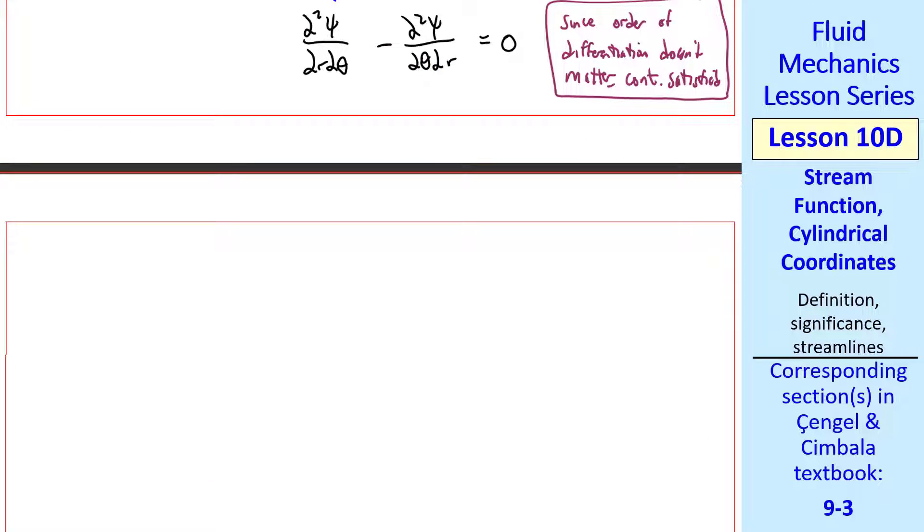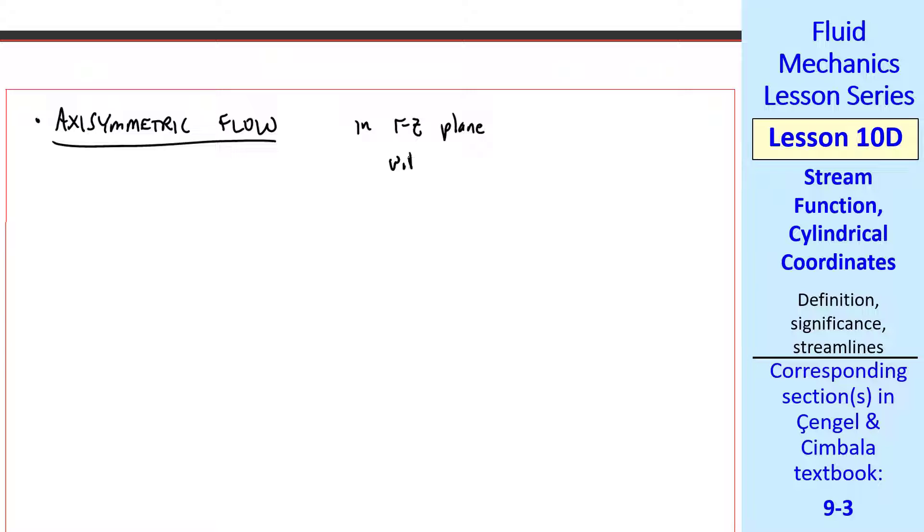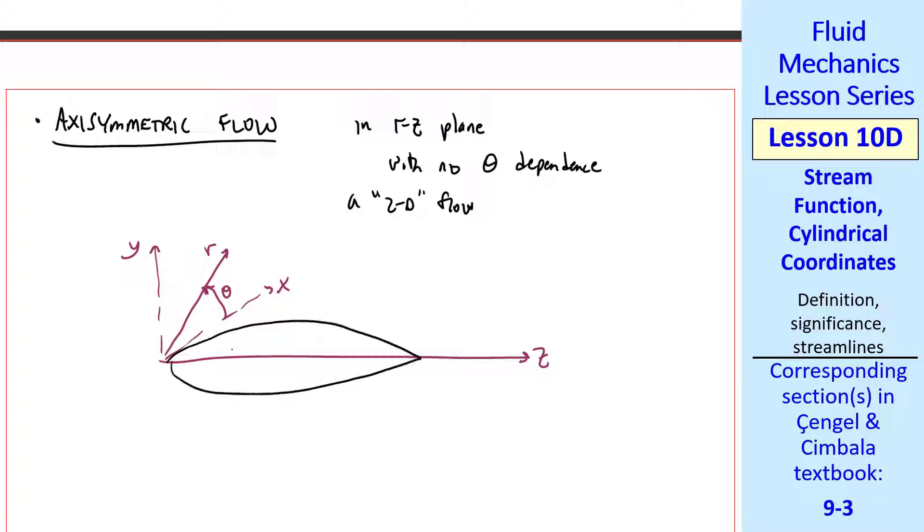The other option is axisymmetric flow. This will be in the RZ plane with no theta dependence. This is still a 2D flow, since the velocity components and psi will depend only on R and Z, two variables. I'll try to sketch this three-dimensionally. Here's our Z axis. Again, if we define radius R and angle theta from the X axis, we can think about an axisymmetric body, such as this torpedo shape, that's round in the theta direction. In other words, if you rotate in the theta direction all the way around, this body does not change. Again, like an axisymmetric torpedo or a sphere, for example.